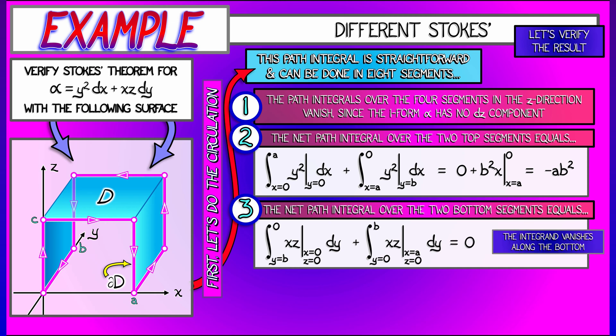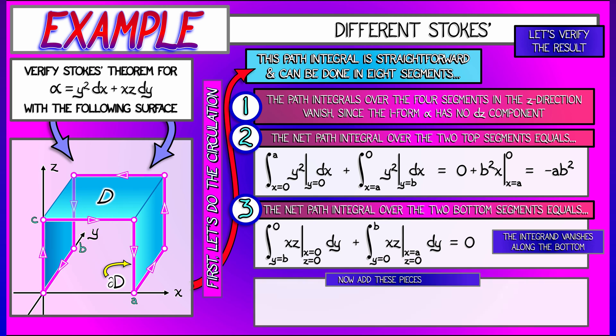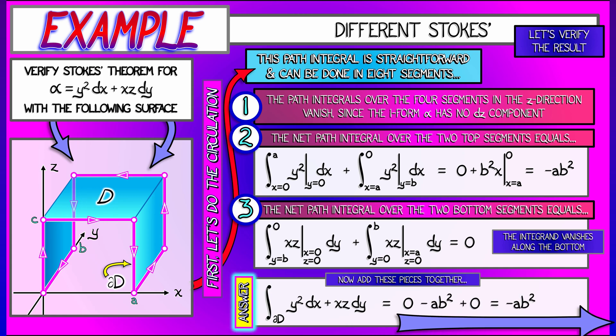The second has x equal a, z equals zero. Both of those vanish. So when I add all of these pieces together to get the net circulation, I have a bunch of zeros and then one term of minus ab squared. That is going to be our net answer.